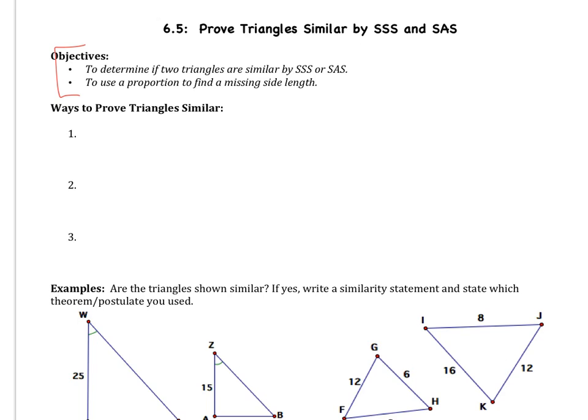There are three ways to prove triangles similar, one of which we've already learned and two that we have not. The one we've already learned is AA, which means two pairs of angles are congruent. Remember, when triangles are similar, all their angles are congruent and all their sides are proportional. To prove that, I only need to show two pairs of angles are congruent.